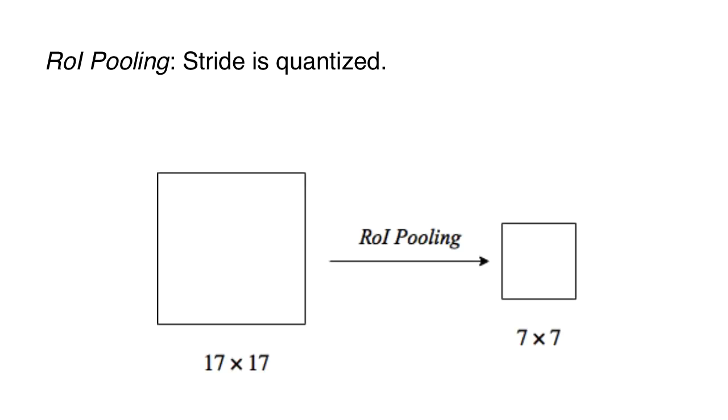Coming back to ROI pooling. When I say that the stride is quantized, what do I mean? Consider a region of interest of 17 x 17, and we need to map it to a space of 7 x 7. The required stride is 17 divided by 7, which is 2.42.